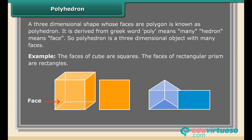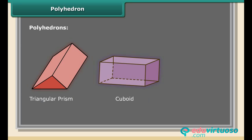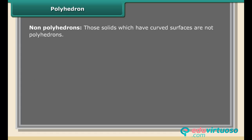Polyhedrons: triangular prism, cuboid, octahedron. Non-polyhedrons: Those solids which have curved surfaces are not polyhedrons, such as cylinder, cone, and sphere.